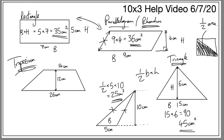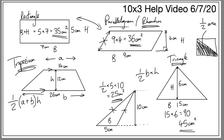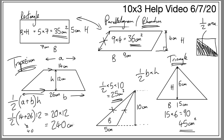Finally we have a trapezium, which is defined by having two sides which are parallel and two sides which are not parallel. The formula for this is: half of (a plus b) times h. The h is the height, a is the length at the top and b is the length at the bottom. Filling this in: half times (14 plus 26) times 12. Well 14 plus 26 is 40, so half of 40 is 20, times 12 gives 240 centimeters squared.